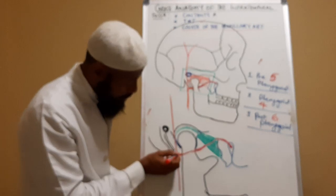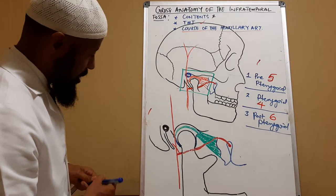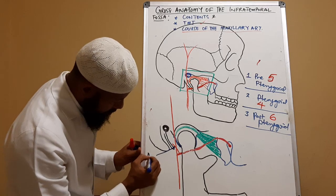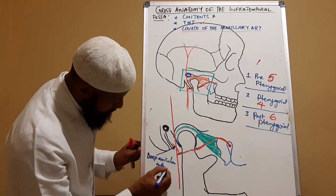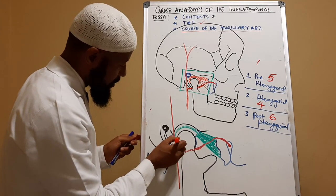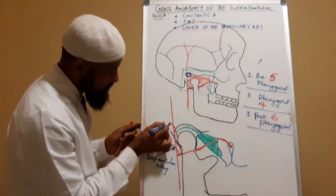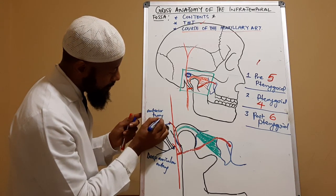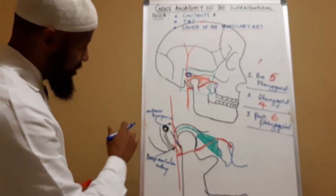The first branch is a small branch here — that is the deep auricular artery. Then we have the next branch, the anterior tympanic artery, because it has to supply the area around the ear and the tympanic membrane.